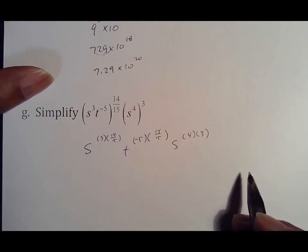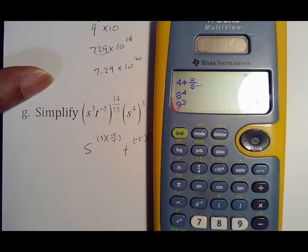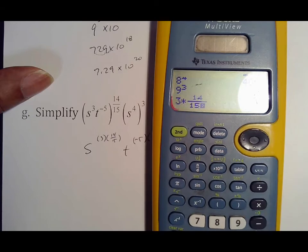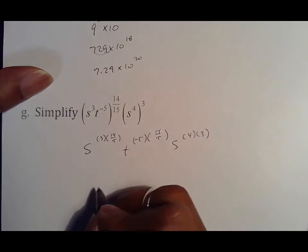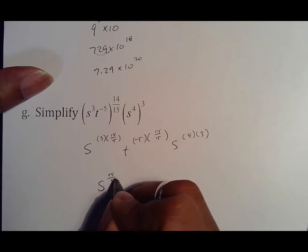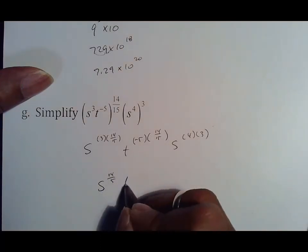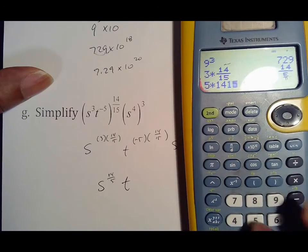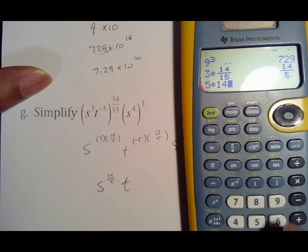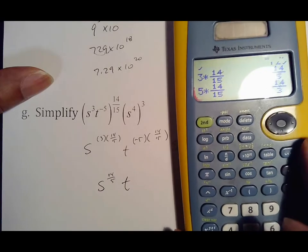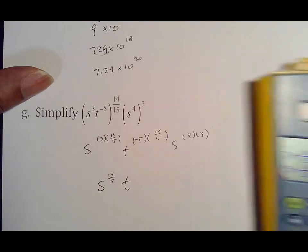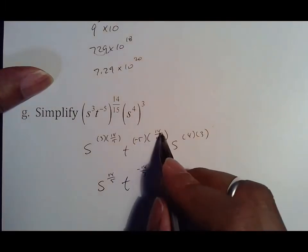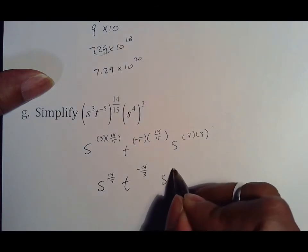I'm going to go ahead and use my calculator here. So 14 over 5, t to the... and there's another way to do it, but I want to make sure that we get to the answer appropriately.